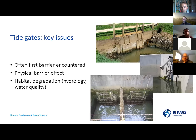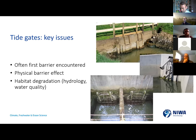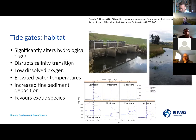As Scott mentioned, with tide gates the key issues we're observing is that they're often the first barrier that a lot of our migratory fish encounter as they move upstream. There are two impacts: there's the physical barrier effect — the gate is closed and you can't get through — but also we've done some work around the habitat degradation, because when you put a gate in it completely alters the hydrology and impacts on water quality.